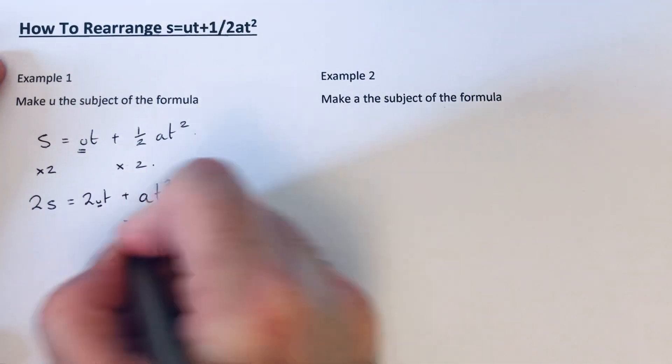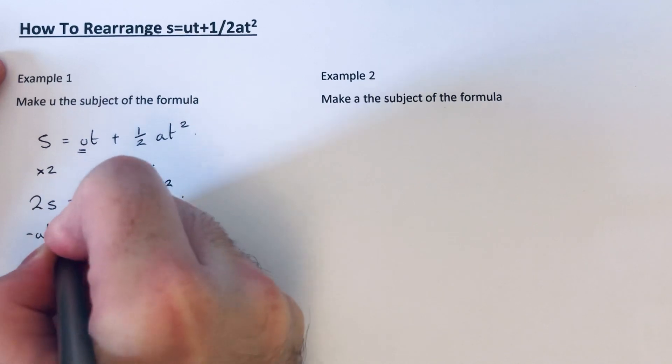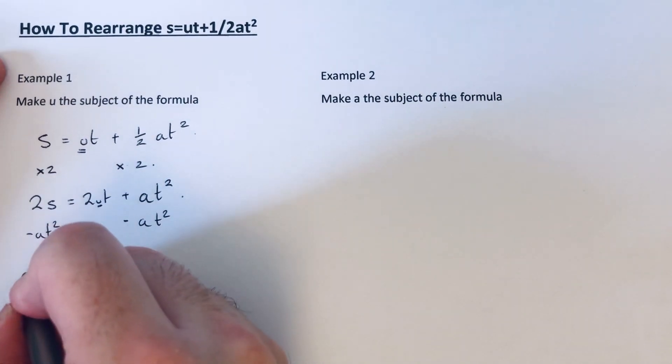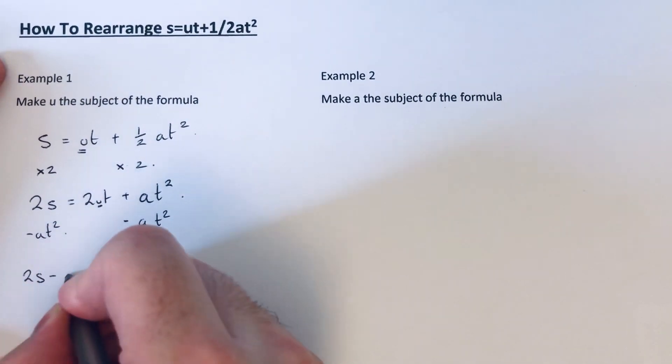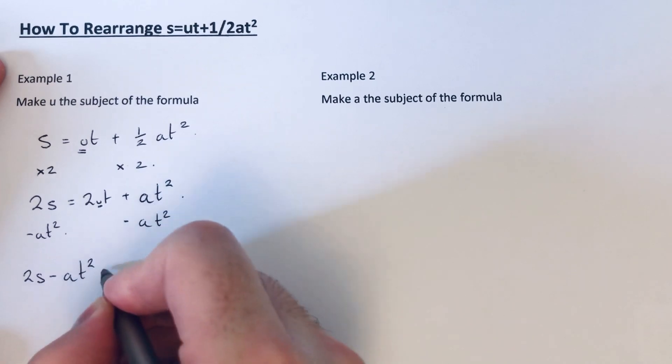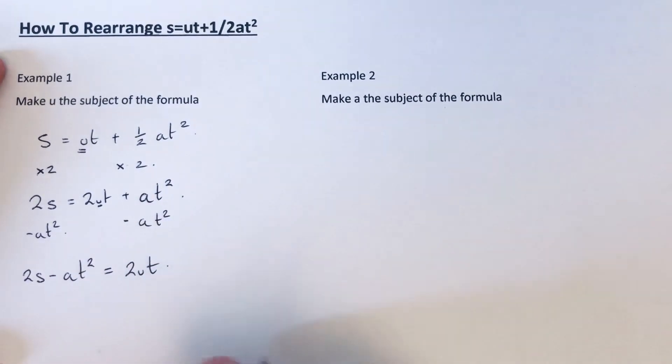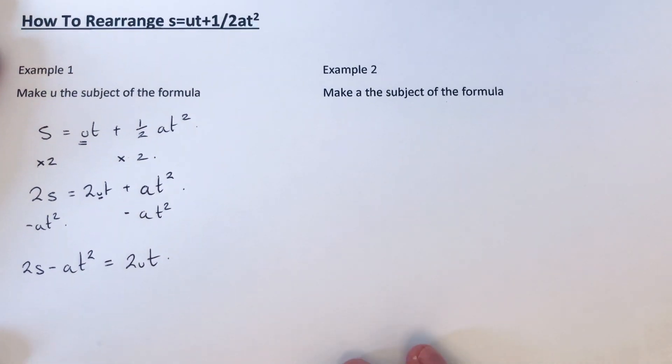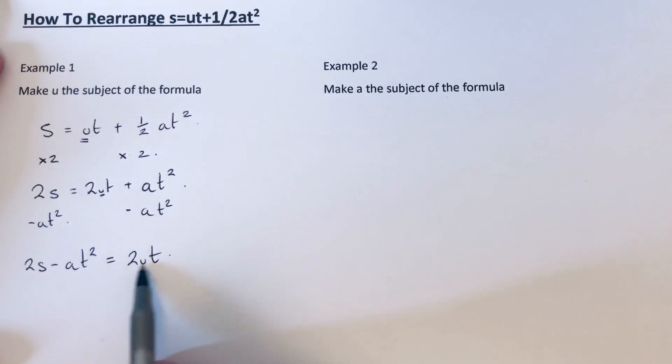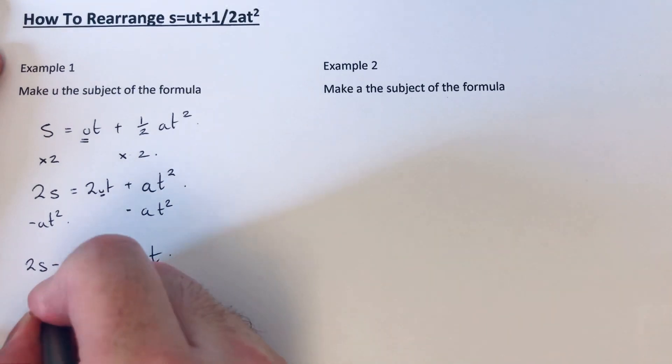So on the left hand side I will have 2s minus at squared equals 2ut. So I've just got one more step to do now.